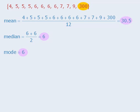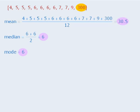So as you can see, the mean of a set of numbers is greatly influenced by numbers that deviate considerably from the other numbers. Also notice that the 300 here had no effect on the median and the mode.